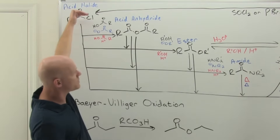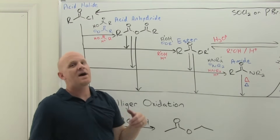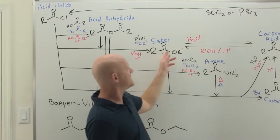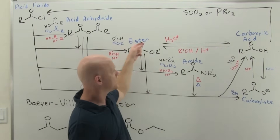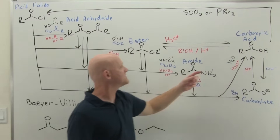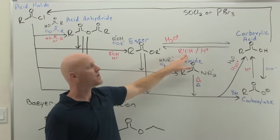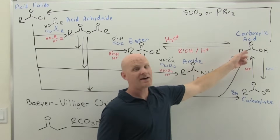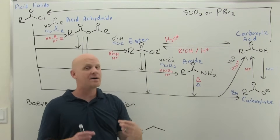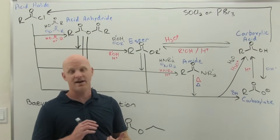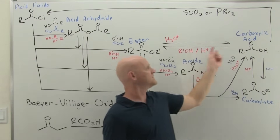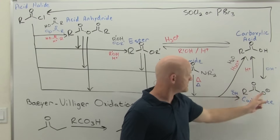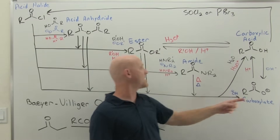Those are the more reactive starting materials for making your ester. You can also deal with things that are equally reactive. Between the ester and the carboxylic acid, we can go back and forth. With the carboxylic acid, you add the appropriate alcohol with acid catalyst. When you start with a carboxylic acid, you have to use acid catalyst — you can't use a base catalyst, because a base would simply deprotonate the carboxylic acid, turning it into a carboxylate, and you'd never turn that carboxylate into your ester.